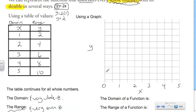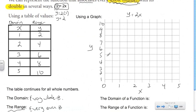We'll title our graph y = 2x. Now let's plot our points. X = 1 when y = 2, so we plot that point. Domain 2, range 4 — plot that. Continuing: 3 maps to 6, 4 maps to 8, and 5 maps to 10.